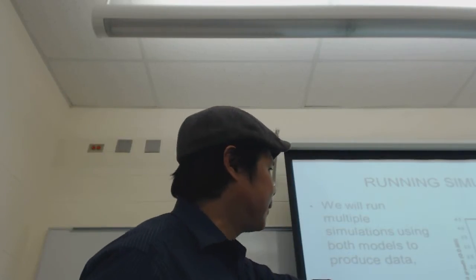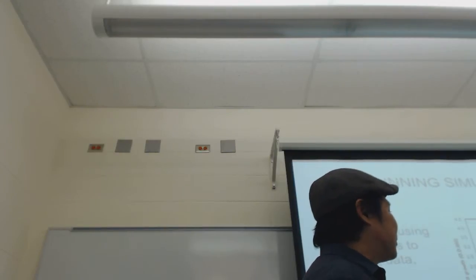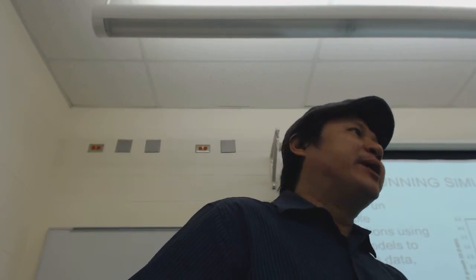So running simulations. So we will run multiple simulations using both models to produce data. So that's how we accrue data is through running or reenacting the process over and over again until we have a normalization of data. Right? So here's a little, that's how our lab results will probably look, something like that. I just made that up. So we will then compare the data with physical laboratory and so on. So that's how we check the accuracy of our models is through looking at actual physical lab data that's already been produced in labs. Right? Okay.